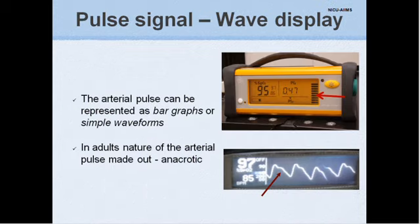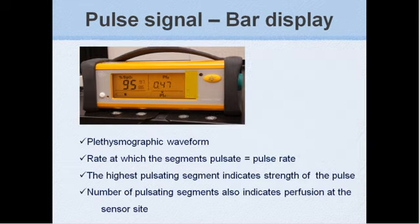The arterial pulse can be represented as bar graphs or simple waveforms. In adults, the nature of arterial pulse can easily be discerned which is usually anacrotic with a clear notch. When the pulse is presented as bar graphs, the rate at which the segments pulsate is equal to the pulse rate. The highest pulsating segment indicates the strength of the pulse. And the number of pulsating segments also indicates perfusion at the sensor site. The more the segments, the stronger the perfusion.